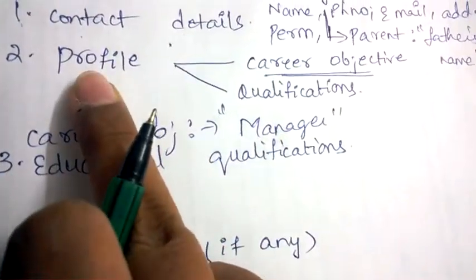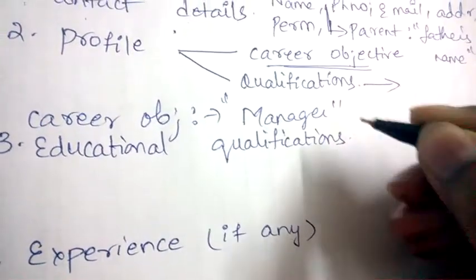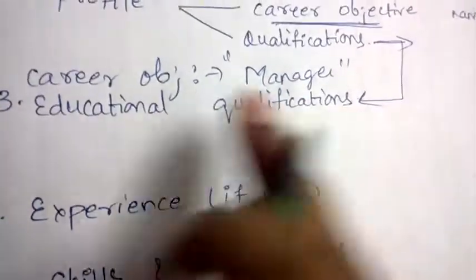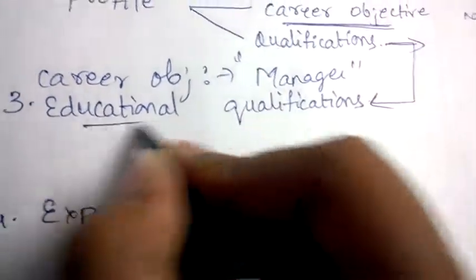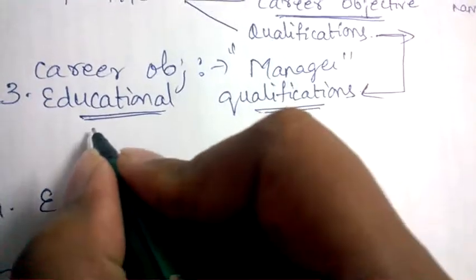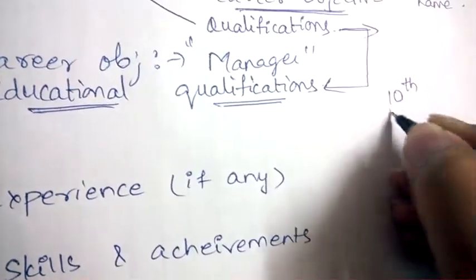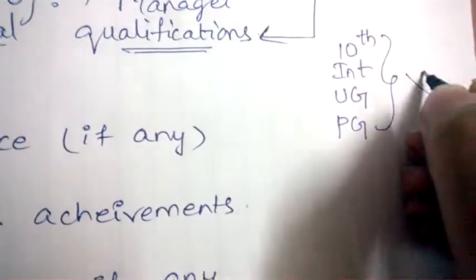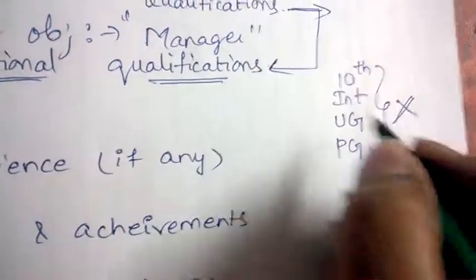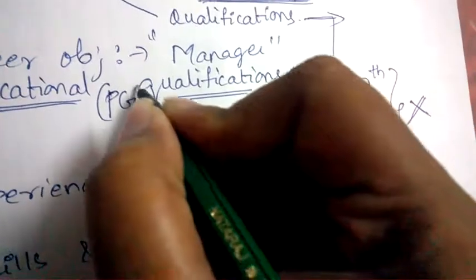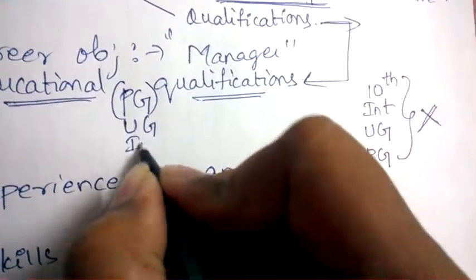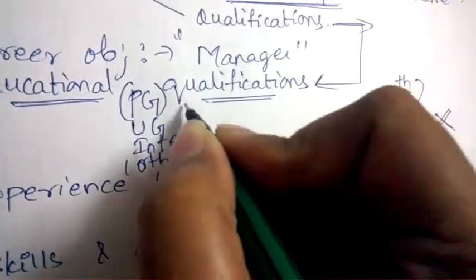Next, after career objectives, mention your qualifications — that is, your educational qualifications. Most students make the mistake of listing their 10th marks first, then intermediate, then UG, then PG. This is completely wrong. You should always start with your most recent qualification, whether that is UG or PG, then go to intermediate, and then 10th marks — in that format.